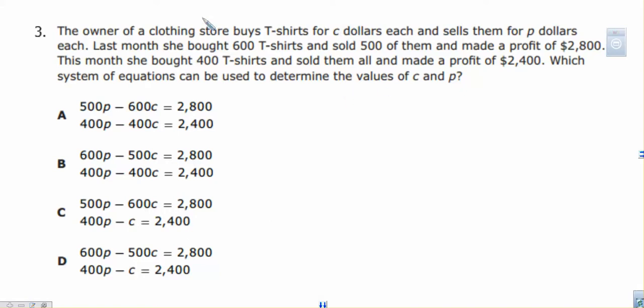So we have buys them for C, sells them for P. Starting right here, buys 600 of them and sold 500 of them. So bought means we should have C with that, 600C and 500P. That's what we're selling them for. So let's just start there. And then that comes out to be 2800. Obviously, we're going to have some subtraction here. 600C, 500P, 2800? Possibly. Put a mark there. 600P minus 500C, nope. That P is incorrect. 500P, 600C, 2800? Possibly. 600P, 500? Nope. So it's either A or C.